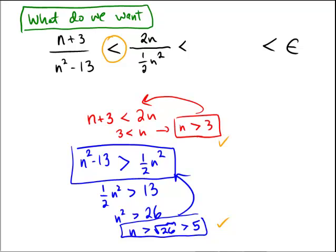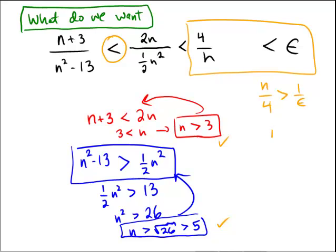Let's see, 2, 1 half, that would be 4. And this would be over n. And then just simply concentrating on this inequality, if I want this to happen, that would just be like saying n over 4 needs to be bigger than 1 over epsilon. And so we would need n to be larger than 4 over epsilon.